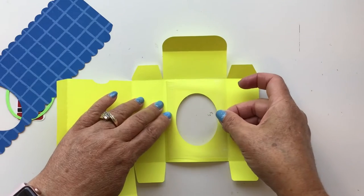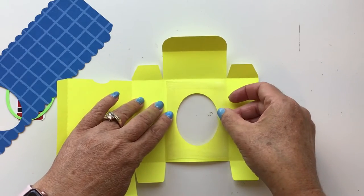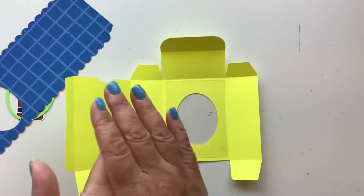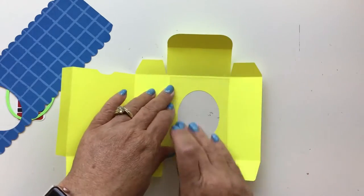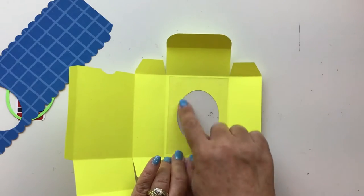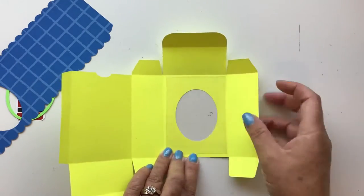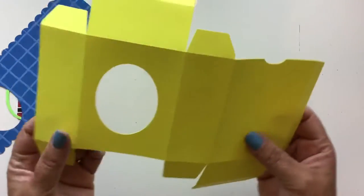If you don't have acetate, you could use vellum. The liners that line your cutting mat, when you get a new cutting mat, save those liners. You can cut them out and use that as windows. Lots and lots of options. Okay, so now we're going to flip it over.